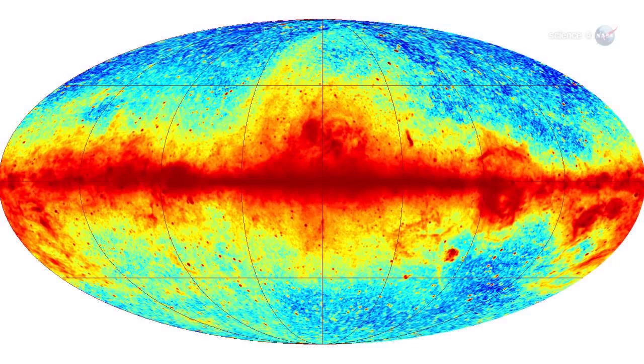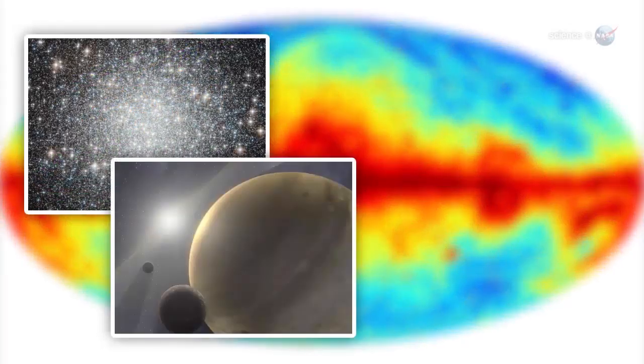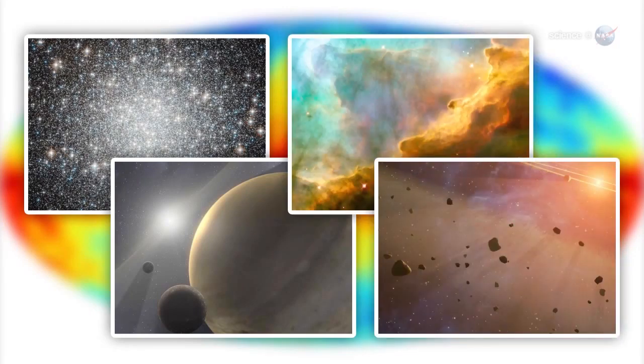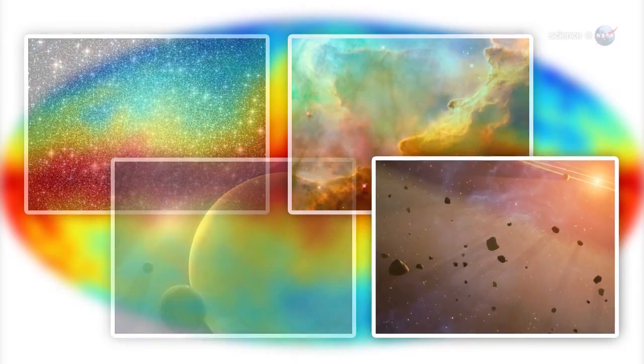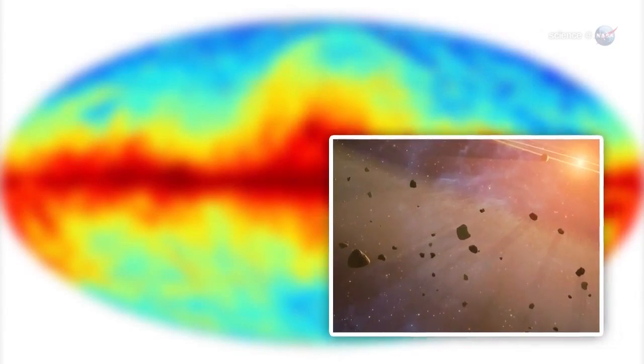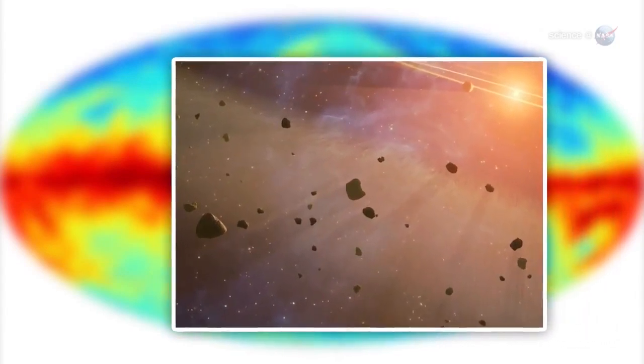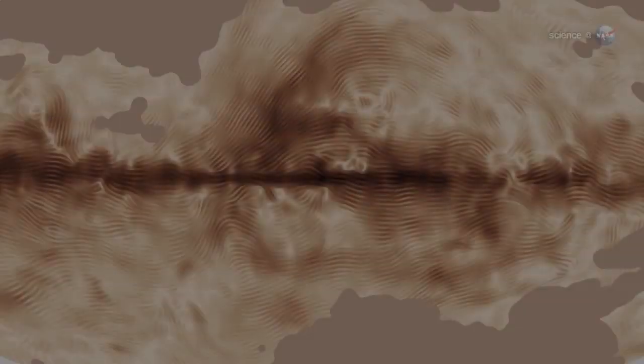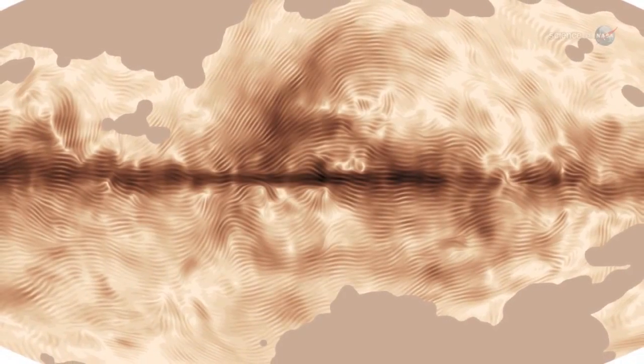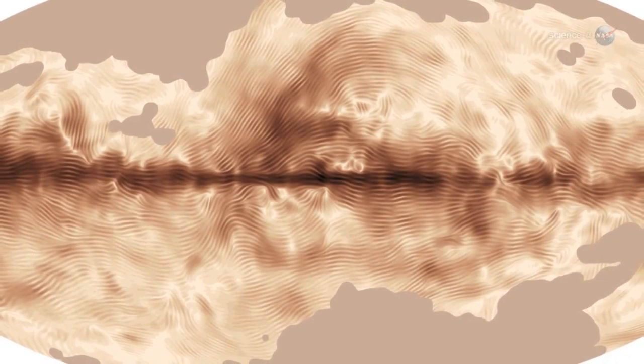The Milky Way is made up not only of stars and planets, but also of gas clouds and dust grains floating between the stars. Dust is the key. Interstellar dust shines with a microwave light that is polarized by galactic magnetism. Tracing the polarization allows researchers to map the Milky Way's vast magnetic field.